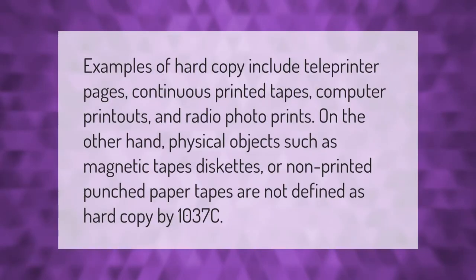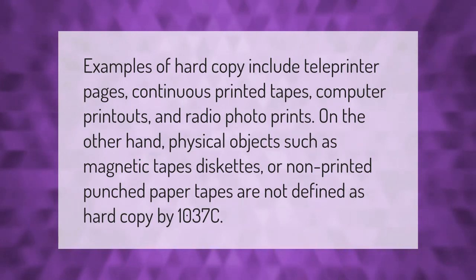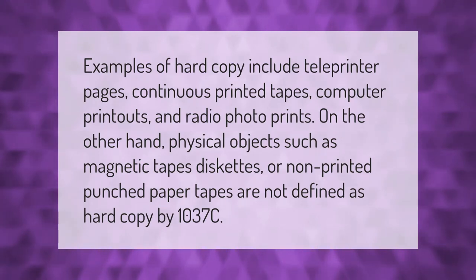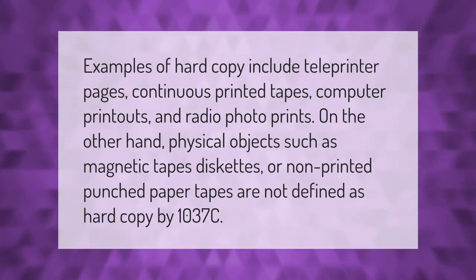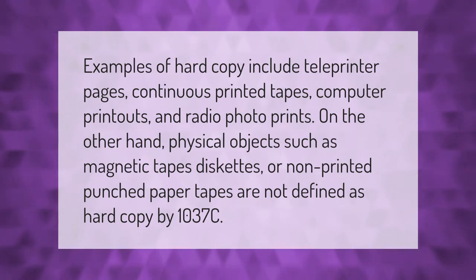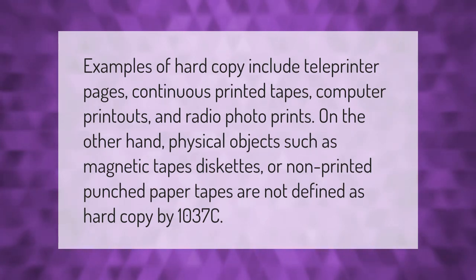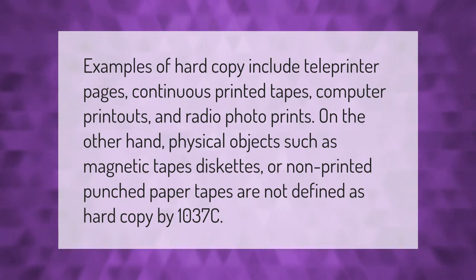Examples of hard copy include teleprinter pages, continuous printed tapes, computer printouts, and radio photo prints. On the other hand, physical objects such as magnetic tapes, diskettes, or non-printed punched paper tapes are not defined as hard copy by 1037c.